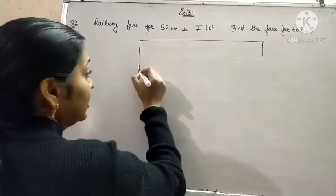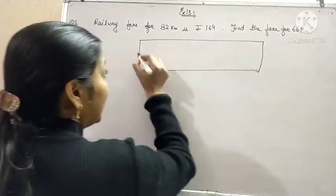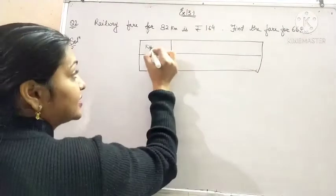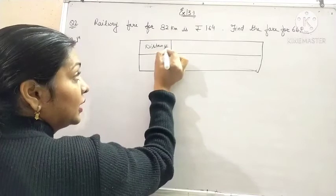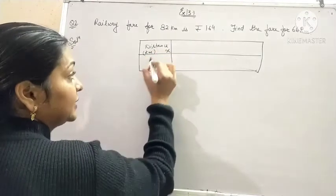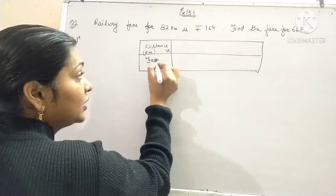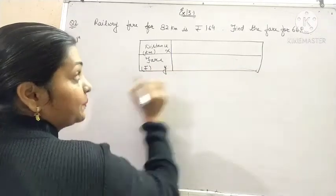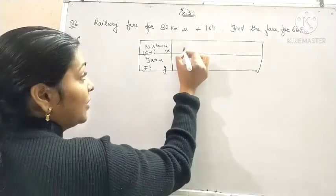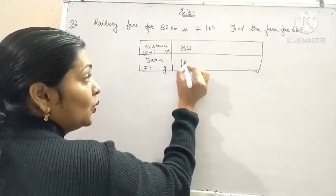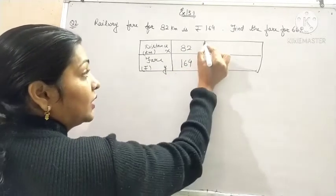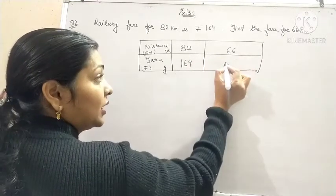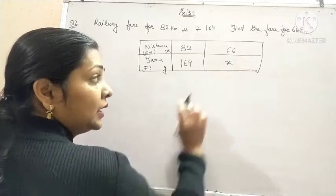The next step in this problem is that you have to formulate a table by taking both the quantities. This is distance given in km, take it as x. And then fare given in Rs., take it as y. Now we have 82 km covered with the fare of 164. 66 km and let it be x.